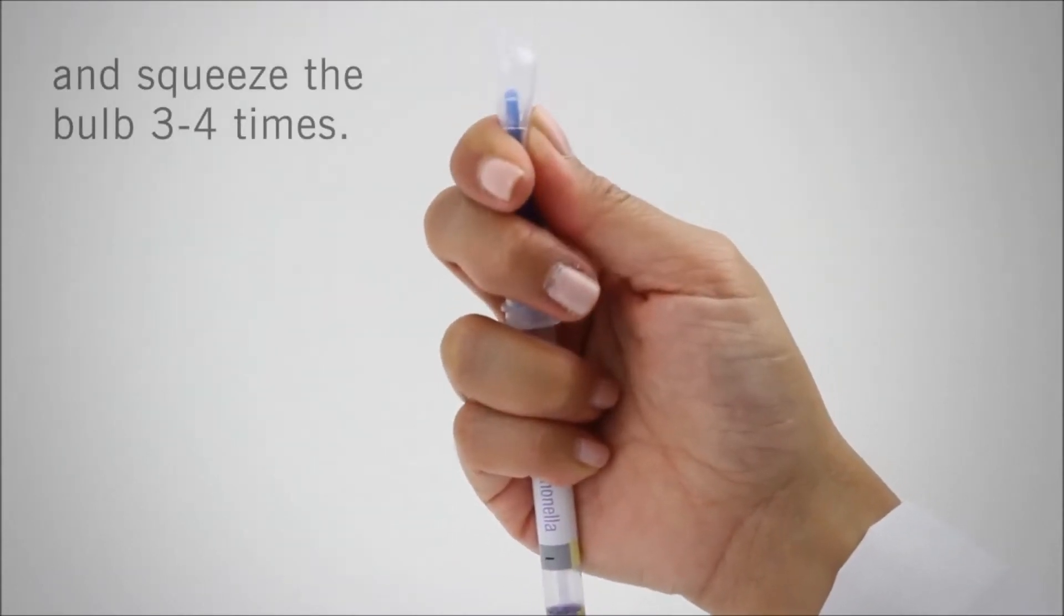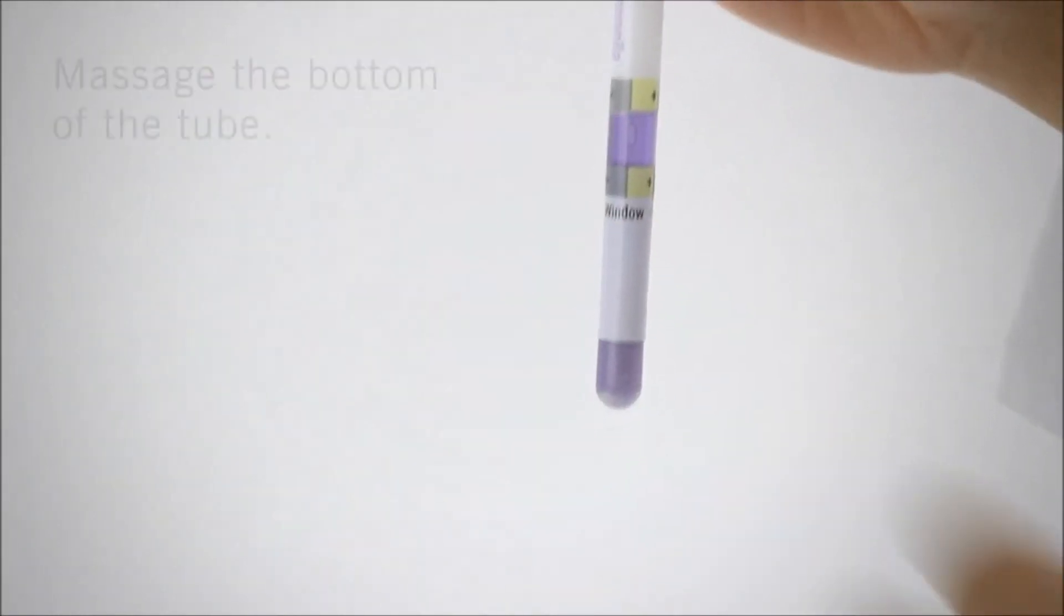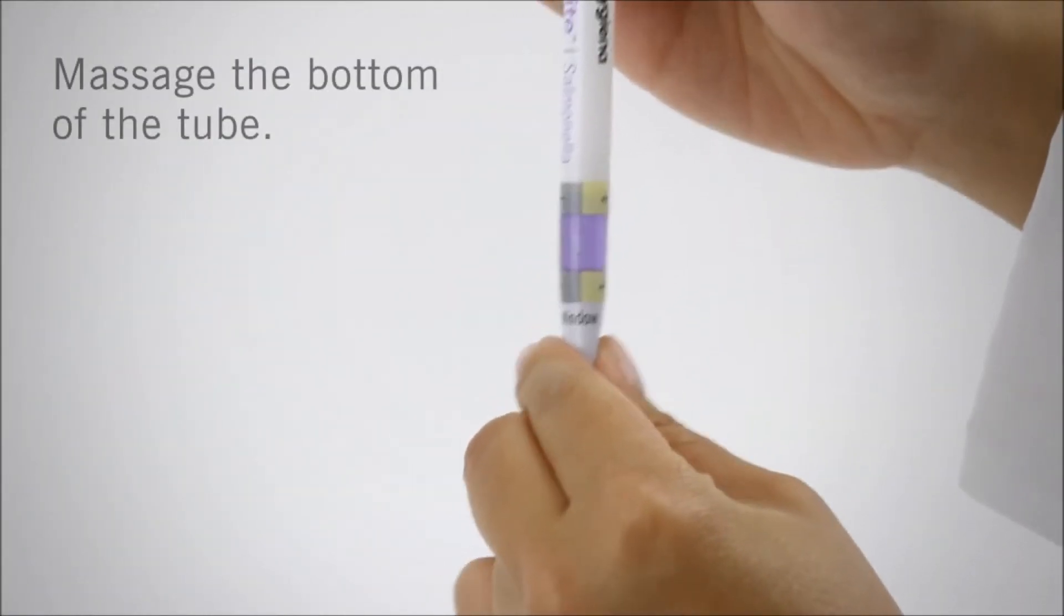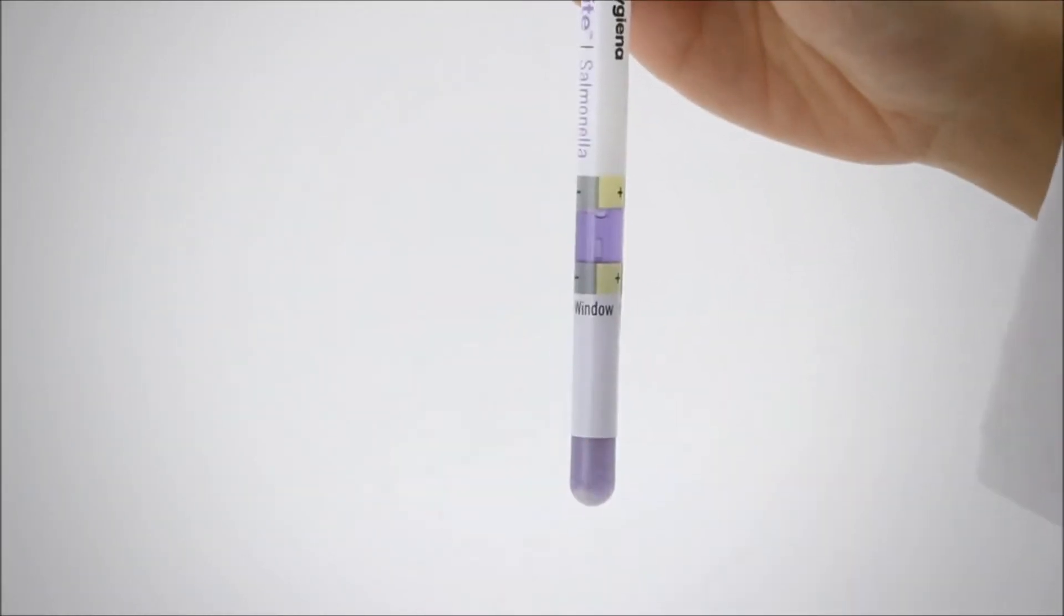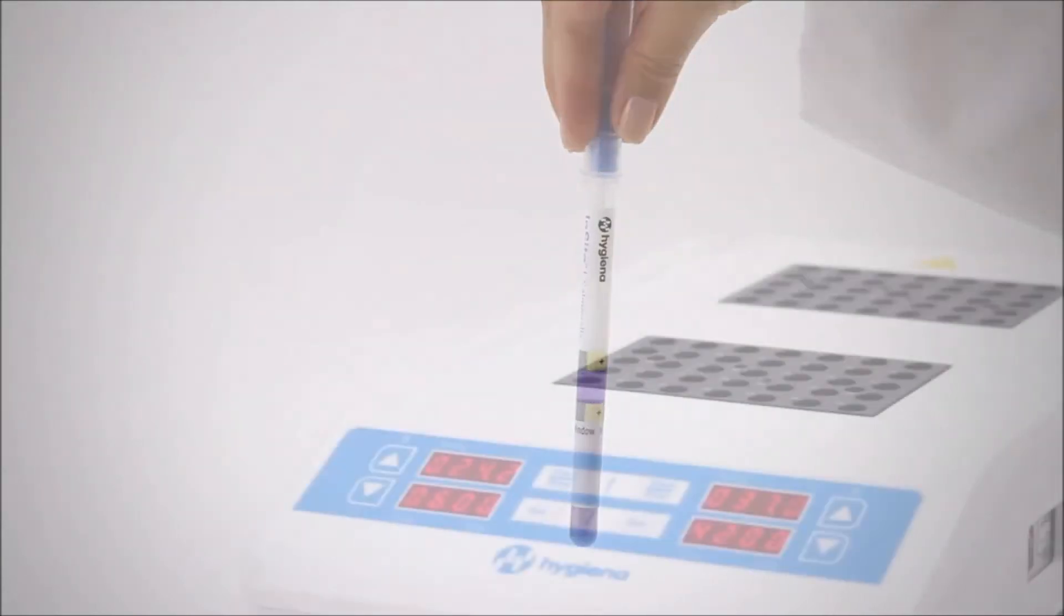Next, squeeze the bulb 3 to 4 times to expel all liquid into the tube. Gently massage the bottom of the tube by squeezing the tube 3 times. Then gently shake for 3 seconds. This will help release cells from the swab and displace air bubbles.